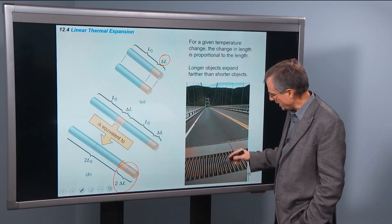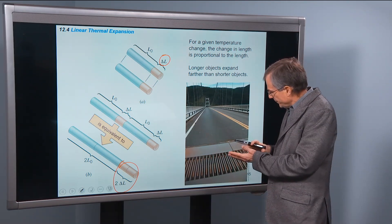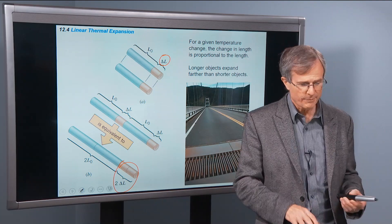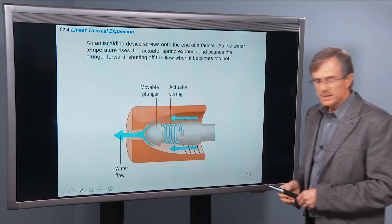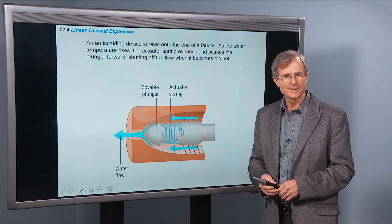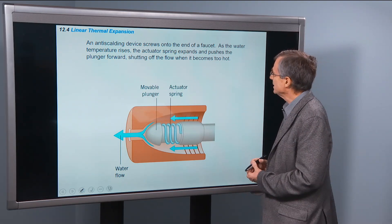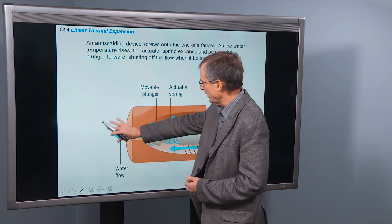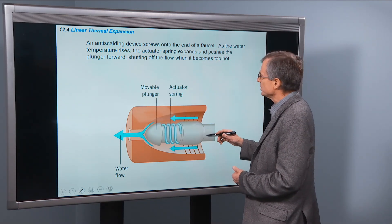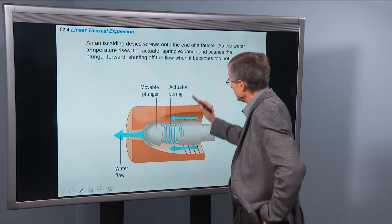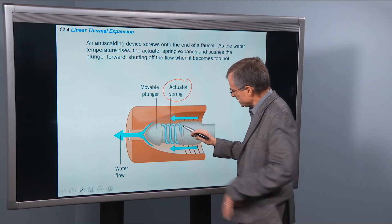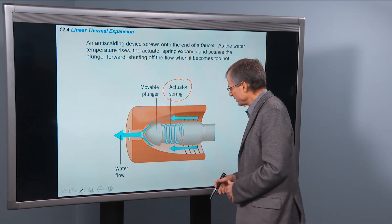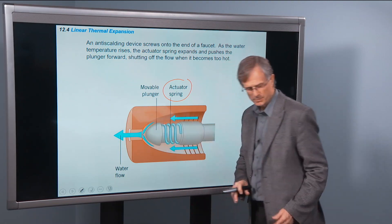So on a long bridge, you've got these expansion joints that allow the bridge to expand and contract as the temperature changes without disrupting the traffic on the road. An anti-scalding device, this is kind of a cool device. It screws onto the end of a faucet. As the water temperature rises, the actuator spring expands. So this spring expands and pushes this plunger into this opening and prevents the water flow. So that's an anti-scalding device that comes from thermal expansion.